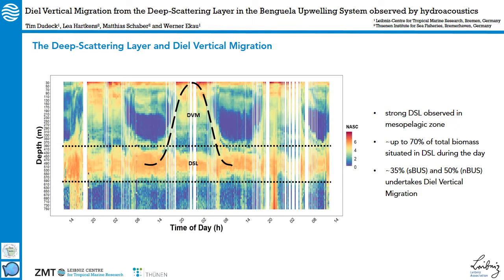The reason for this is the diel vertical migration from the deep scattering layers in this region. Here depicted is an echogram of a 72-hour station in the southern Benguela subsystem, and we clearly see a deep scattering layer between 400 and 600 meters depth and diel vertical migration during the night. Interestingly, up to 70 percent of the total water column biomass is situated in the deep scattering layer during the day, and about 35 to 50 percent of that layer migrates up to the surface at night, so there's very intensive energy transport going on between the photic zone and the mesopelagic zone.